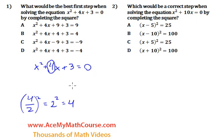So the first step will be to add a 4 to both sides of the equation, both sides of the equal sign. So we're going to have x squared plus 4x plus 4 plus 3 equals 4.